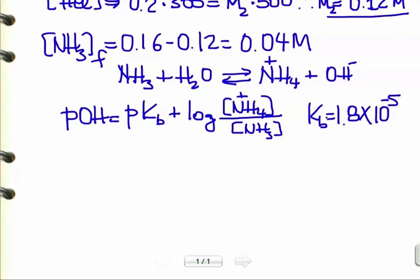We have Kb that was given, 1.8 times 10 to the power of negative 5. Therefore, we plug in to get pKb, which is the minus log of that number, which is 4.75.